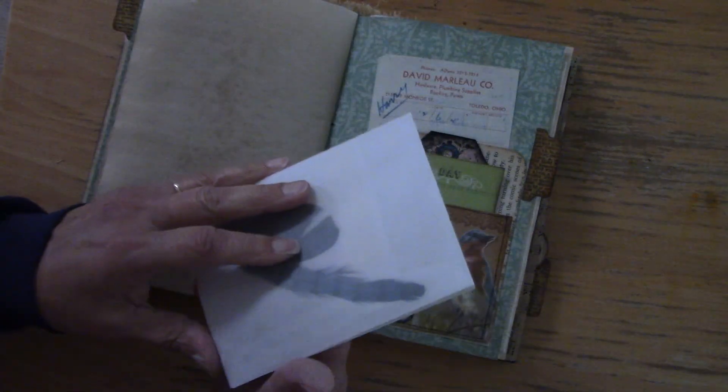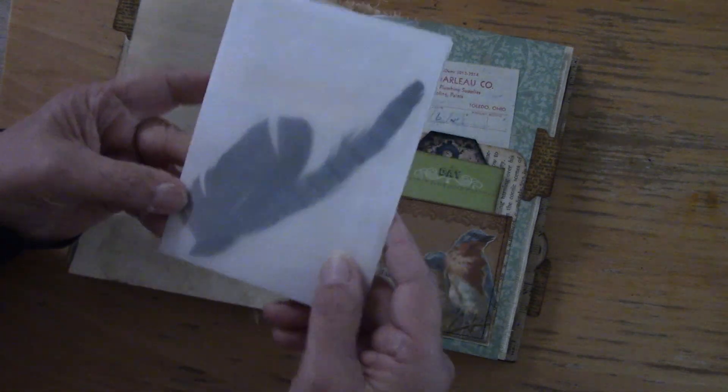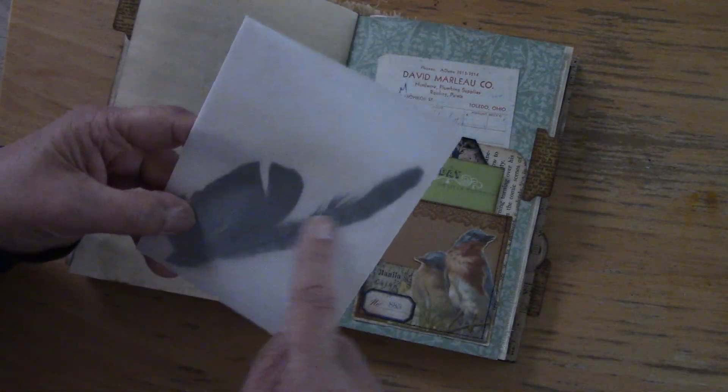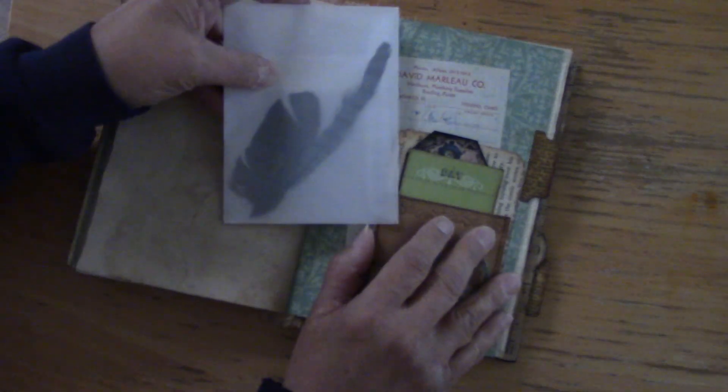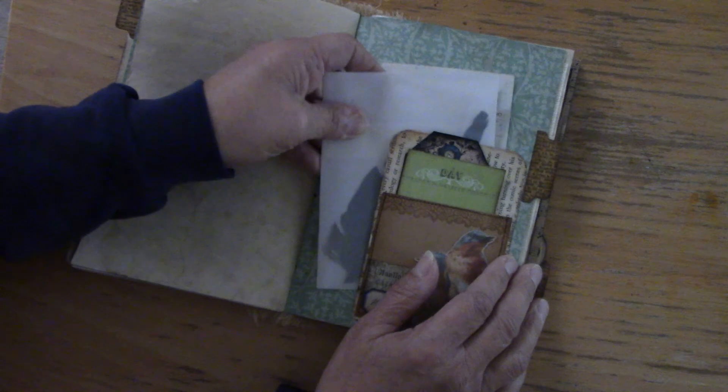And then I have a vellum type envelope here and it has two bird feathers. I have one really long blue jay feather and then another one that's just a dark, probably a pigeon feather. And I have that stuck in there.